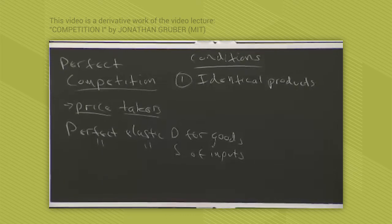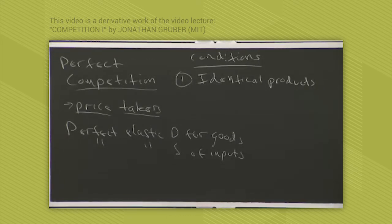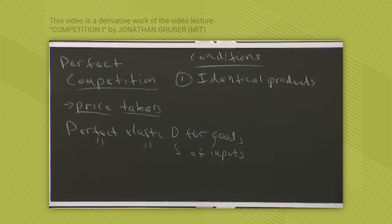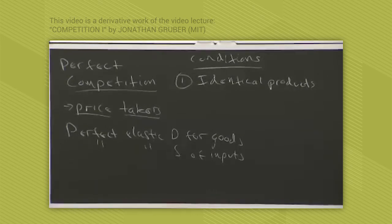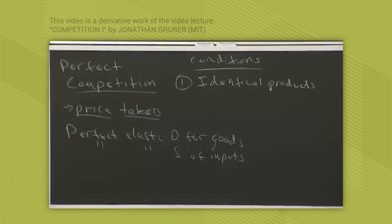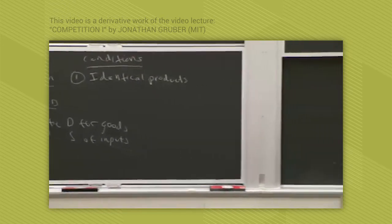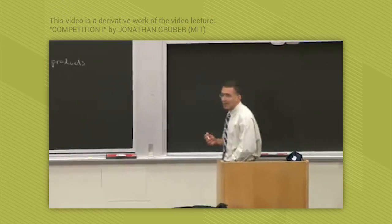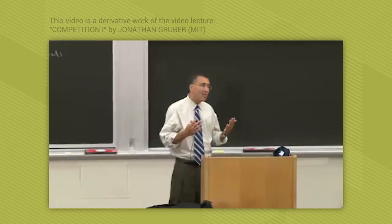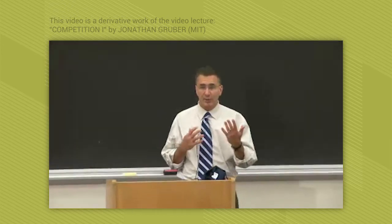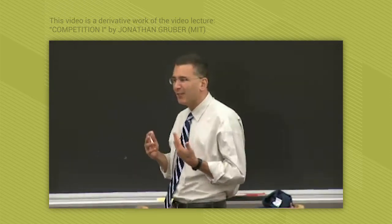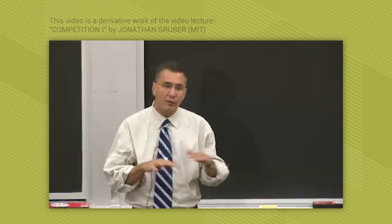So when I say identical products, they don't have to literally be identical, but consumers have to consider them identical for purposes of their demand across firms. So firms have to sell identical products for perfect competition. Because if products aren't identical, then firms will be able to charge different prices from each other because they have something different to sell.